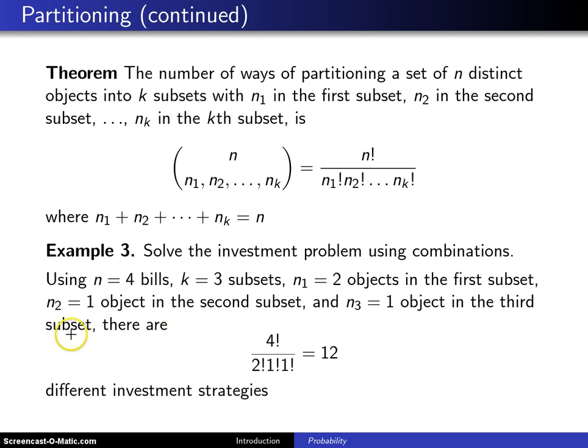That means there are n factorial, which is 4 factorial, divided by 2 factorial times 1 factorial times 1 factorial in the denominator. When you work that out, there are 12 different investment strategies, which is exactly what we got by enumeration.